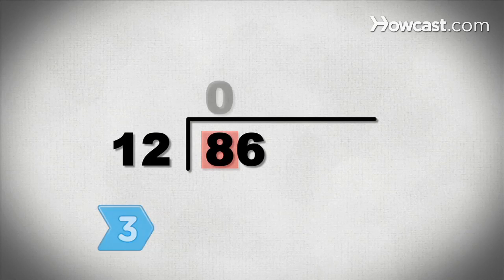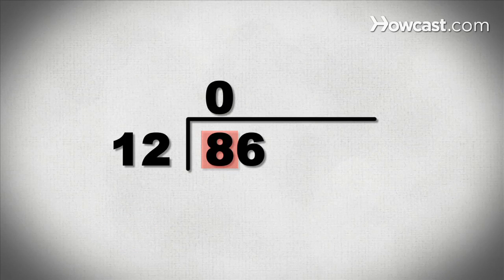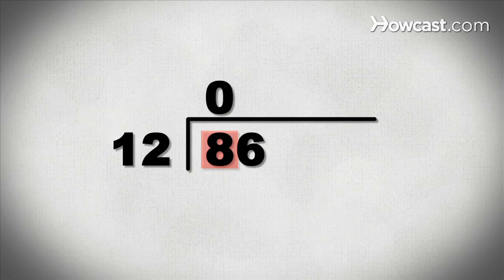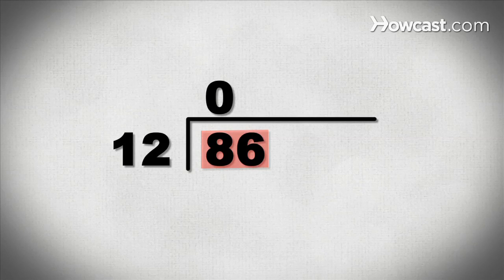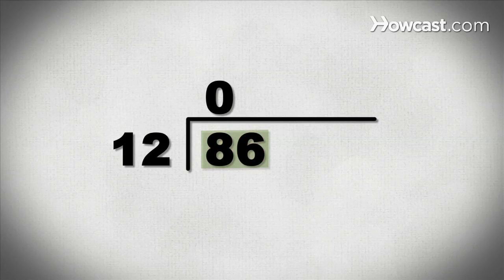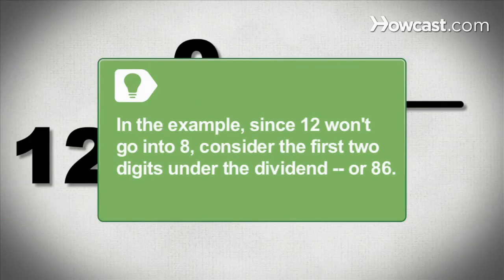Step 3. Place a zero above that first digit on the top of the division box if the divisor is too large to go into the first digit. Move one digit to the right and keep dividing into that number. Keep doing this until you have found a number that the divisor can be divided into. In the example, since 12 won't go into 8, consider the first two digits under the dividend, or 86.